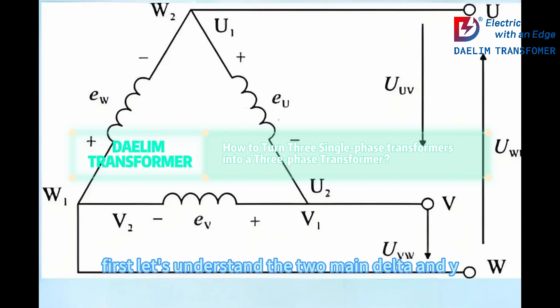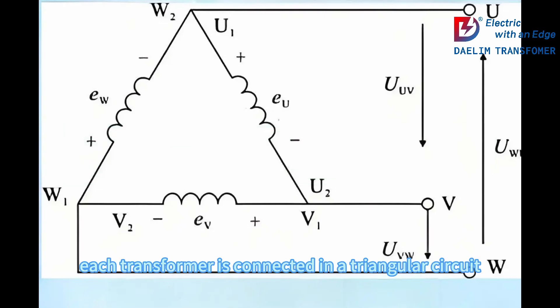First, let's understand the two main configurations, delta and Y. In a delta connection, each transformer is connected in a triangular circuit. This is ideal for heavy industrial loads.